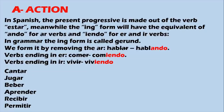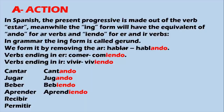For -ER verbs, we remove -ER and add -iendo: 'beber' becomes 'bebiendo' (drinking), and 'aprender' becomes 'aprendiendo' (learning). For -IR verbs: 'recibir' (to receive) becomes 'recibiendo' (receiving), and 'permitir' (to allow or permit) becomes 'permitiendo' (allowing or giving permission).